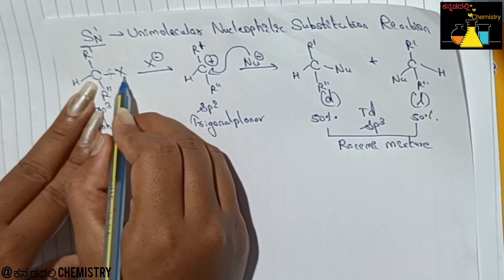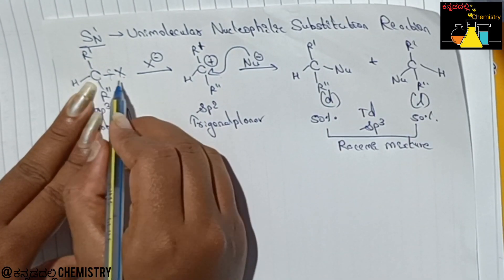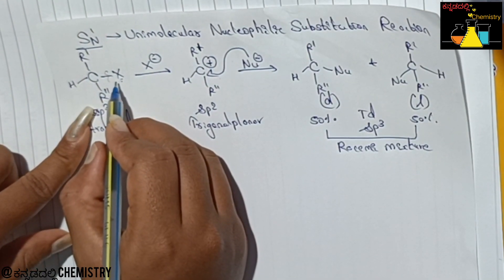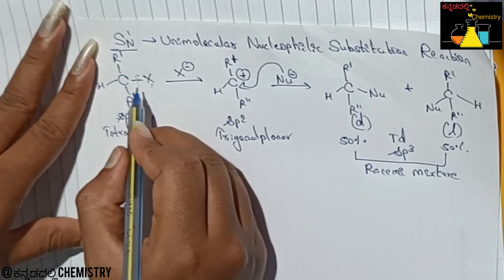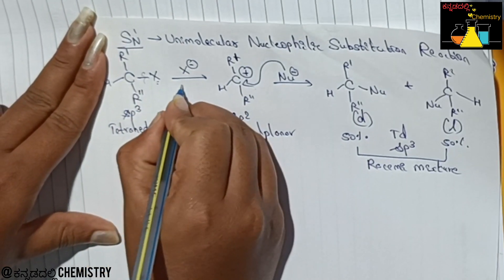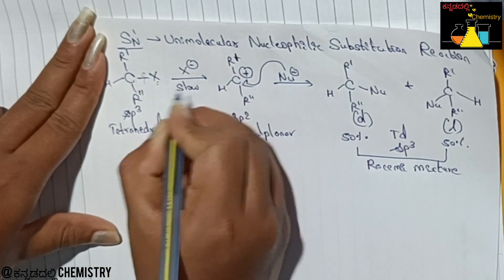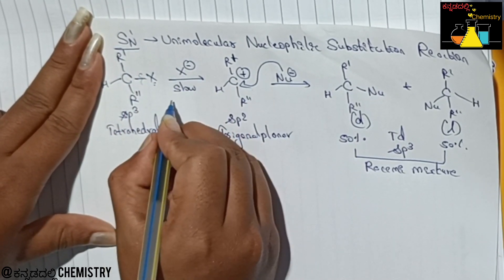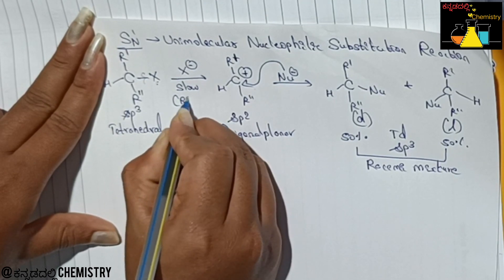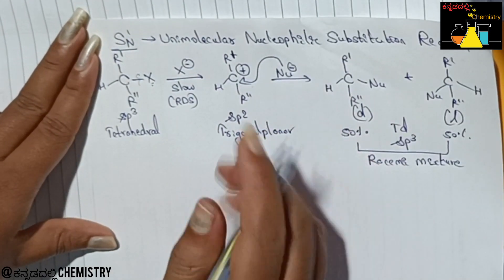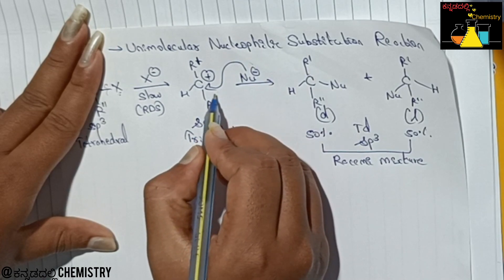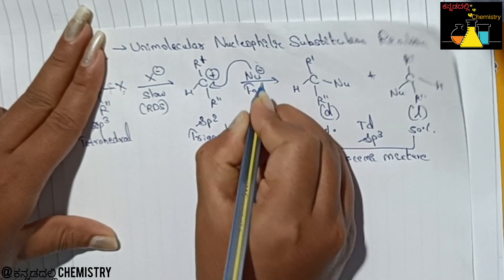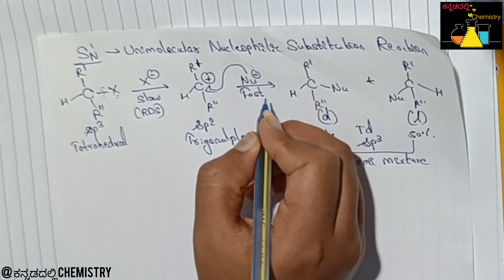Carbon and halogen: halogen is more electronegative. The carbon–halogen (C–X) bond breaks in a very slow process. This bond breaking is the rate-determining step. The nucleophile attack follows after this slow step.